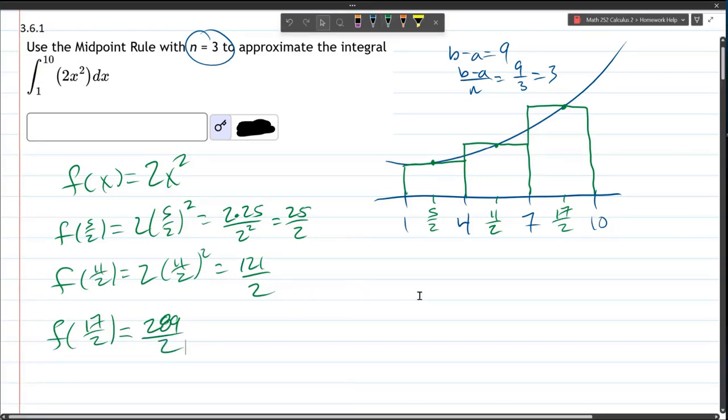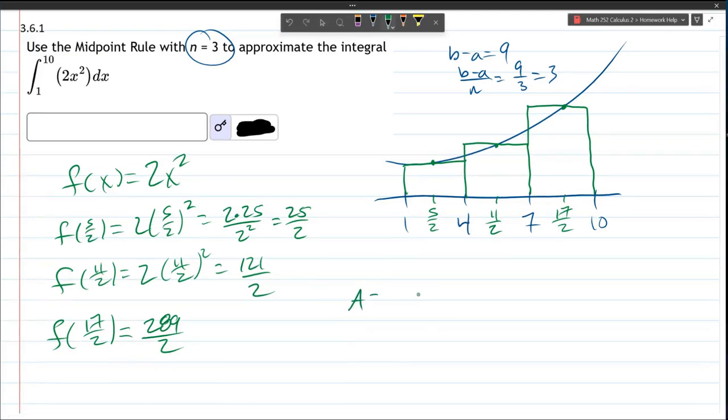All right. These are the y values. And all you do for the area... This is an approximation. It's not equal. So, I probably should use the squiggle equals. So, I'll go a1, a2, a3.